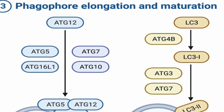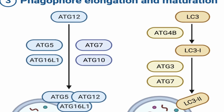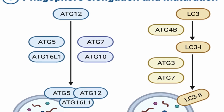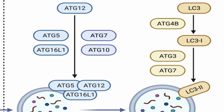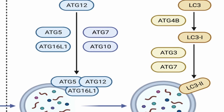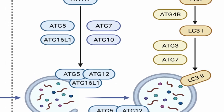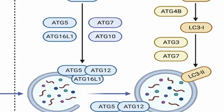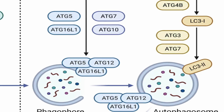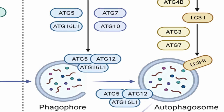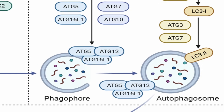The phagophore elongates and expands to enclose cellular components destined for degradation, such as damaged organelles or protein aggregates. This process involves the conjugation of ATG-12 to ATG-5, as well as the formation of ATG-8 family proteins that are lipidated and integrated into the phagophore membrane. These lipidated ATG-8 proteins are commonly used as markers for autophagic structures.